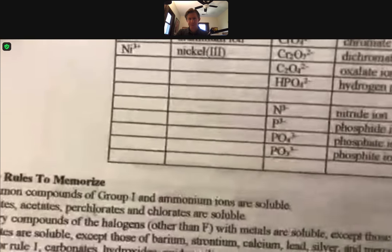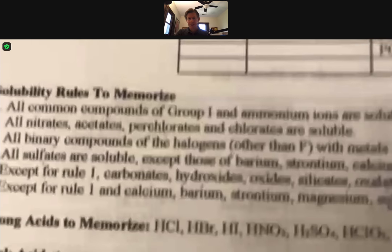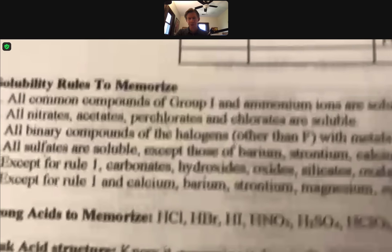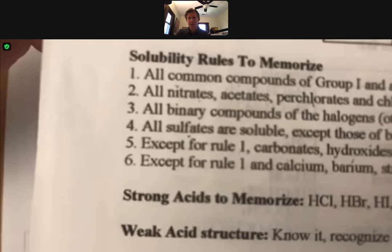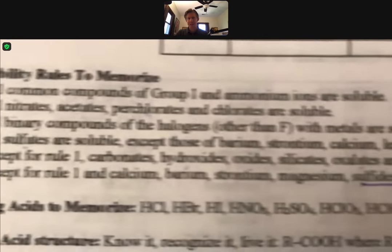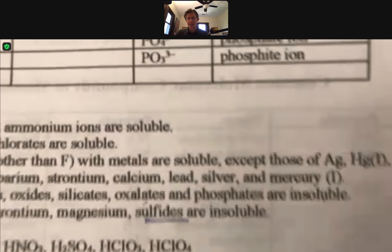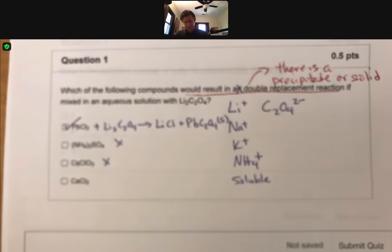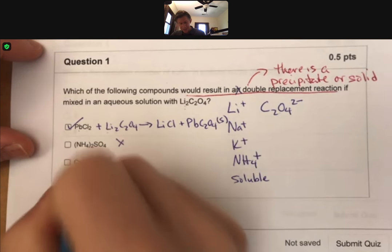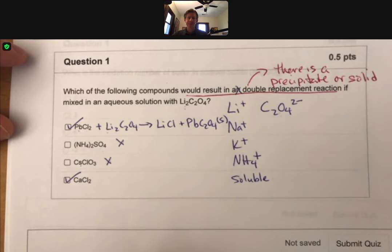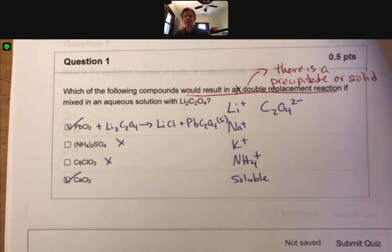So rule number five, except for rule number one, carbonates, hydroxides, all the way down to oxalates are insoluble. So that means calcium oxalate will be insoluble. And that's a little bit about how to do that one.